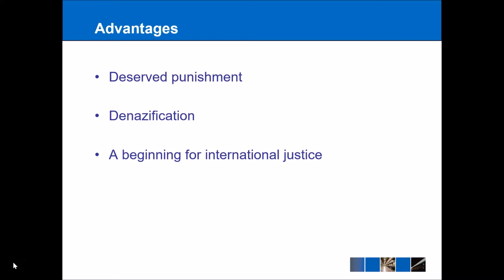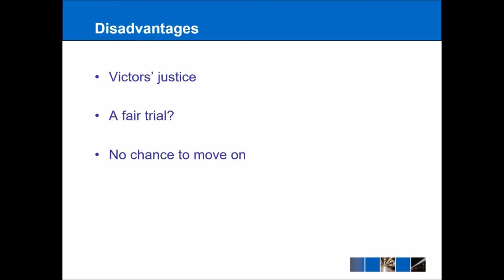Another advantage was that this was seen as a beginning for international justice as we know it today. Shortly after the war trials were concluded, the International Court of Justice was set up, and also we have the UN Declaration on Human Rights that sought to examine the human rights abuses discovered during the trials and make sure that this would never happen again. One of the main disadvantages was that this was seen as a form of victor's justice — all of the prosecutors and judges were from Britain, France, America, and the USSR, the countries that had won World War II, making it more a way for victorious countries to consolidate their victory.